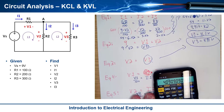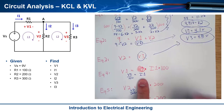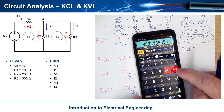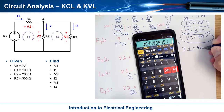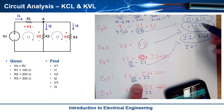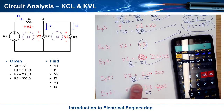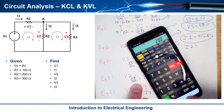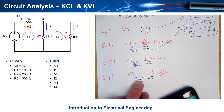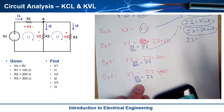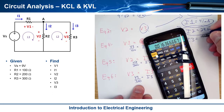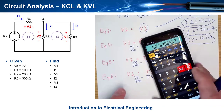To find the three currents: I1 = V1/100 = 4.1/100 = 41 mA. I2 = V2/200 = 4.91/200 ≈ 24.6 mA. I3 = V3/300 = 4.91/300 ≈ 16.3 mA. All six unknowns are now solved.